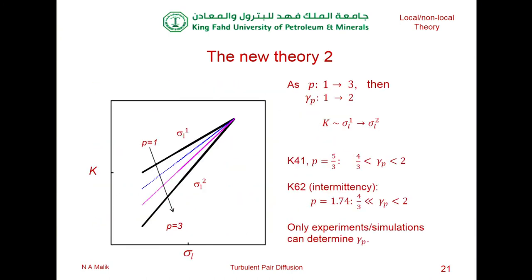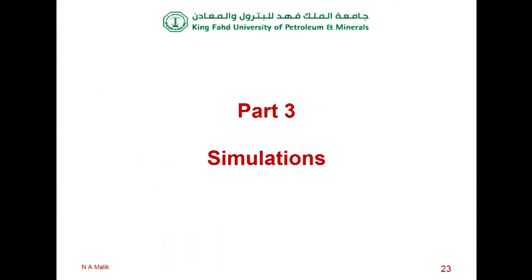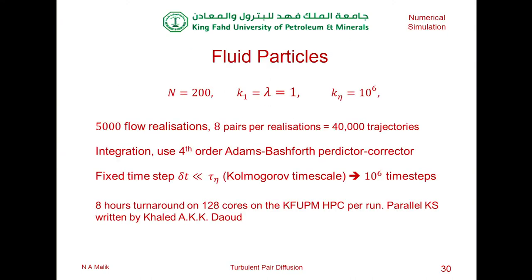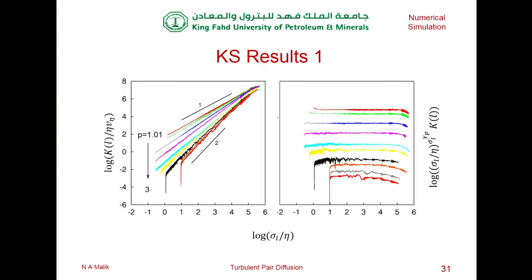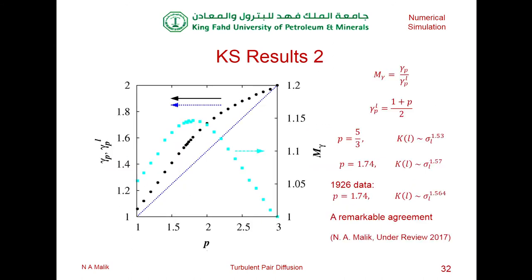The theory predicted a smooth transition going from gamma=1 to gamma=2 all the way through. This is the result from KS, which more or less exactly matches the theory. We get close to but cannot reach the singular limit of P=1. On the right, the same data compensated by the appropriate power so that it appears flat — and wherever it's flat, that's the value of gamma we take.